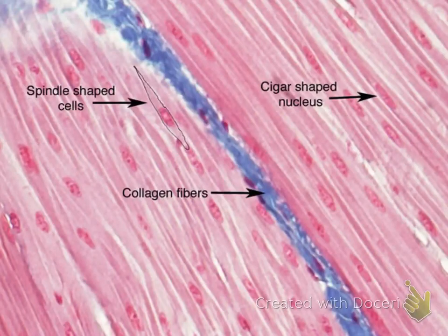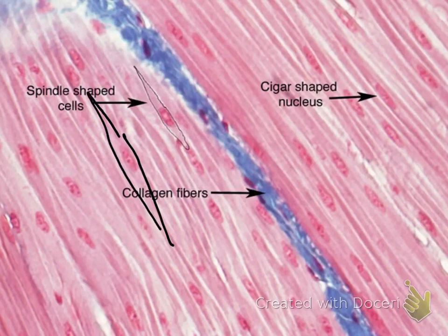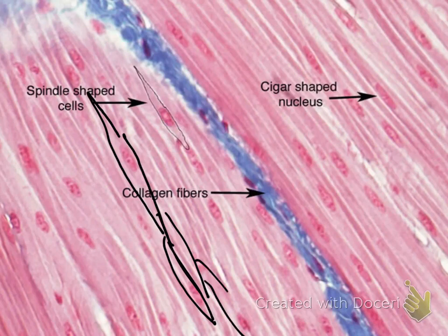Notice that the smooth muscle tissue has a smooth, flowing appearance — that is where it gets its name. You can clearly see the nuclei as oval-shaped, centrally located structures. The cells are spindle-shaped and packaged together. The spindle shape gives smooth muscle its smooth flowing motion. Also notice that there are no striations in smooth muscle.